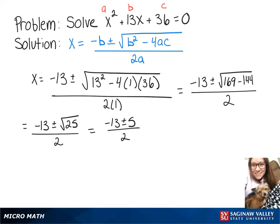So now we're going to have two possible answers for x. We'll have x equals negative 13 plus 5 over 2 or x equals negative 13 minus 5 over 2.